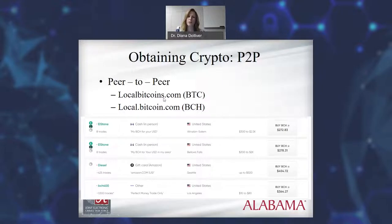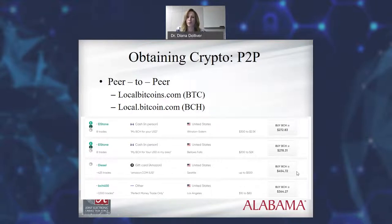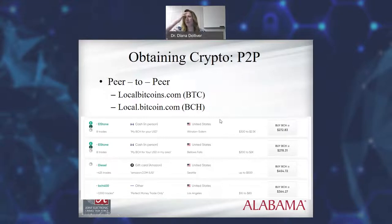You could also go to LocalBitcoins.com for Bitcoin or local.Bitcoin.com for Bitcoin Cash, and you can see the prices they're offering — some have significantly up-charged for their services. This could be another way of more anonymously transacting, or at least cashing in and cashing out. It's definitely not the most popular method just because exchanges are so easy to use, but even if you don't want to give all your information to KYC exchanges, you can use one overseas that doesn't have as much security.